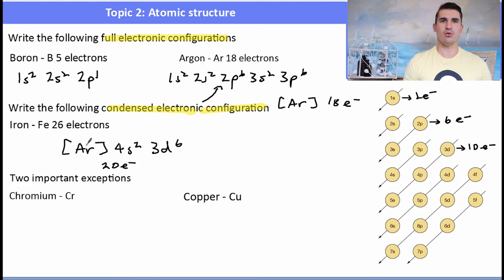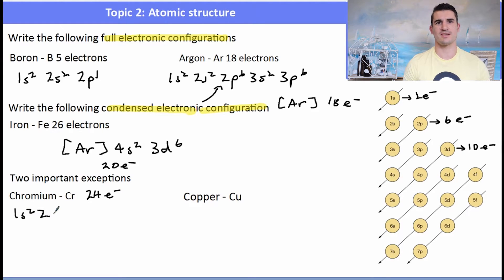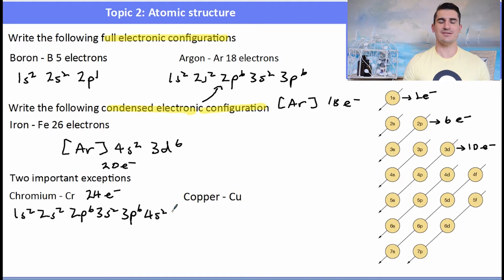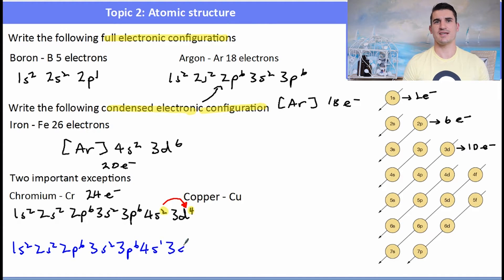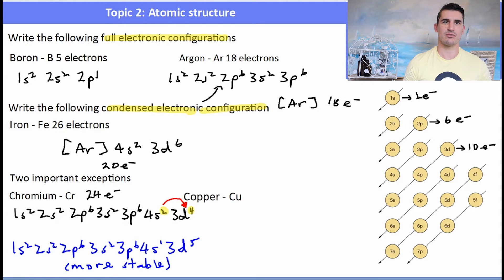There are two important exceptions in the transition metals. Chromium would normally be [Ar] 4s² 3d⁴, but that arrangement is not stable. Chromium promotes one 4s electron into an empty 3d orbital, because a half-filled 3d subshell is much more stable than a partially filled one. This gives chromium the configuration [Ar] 4s¹ 3d⁵, which is the stable arrangement found on periodic tables.